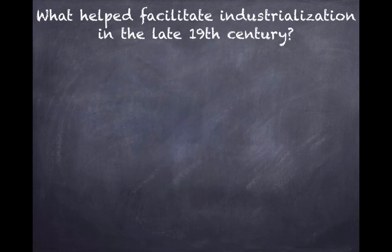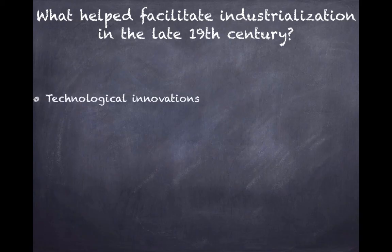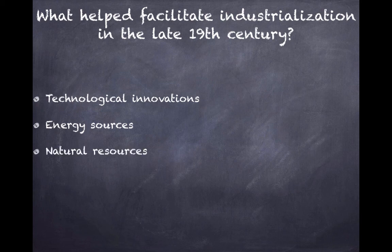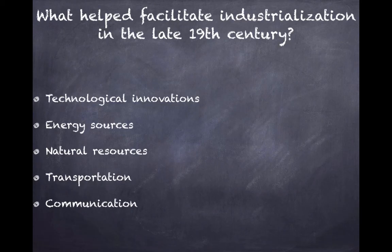So what helped facilitate or encourage industrialization in the late 19th century — the late 1800s? A couple of things you should be familiar with: technological innovations, energy sources, natural resources, transportation, and communication. These five things together — be able to identify and explain how they contributed to industrialization.